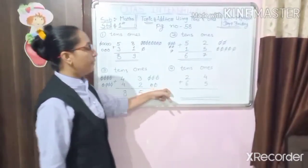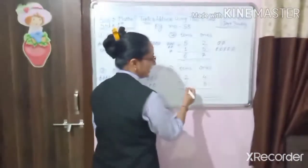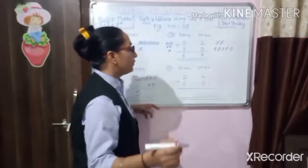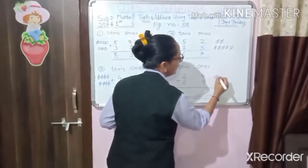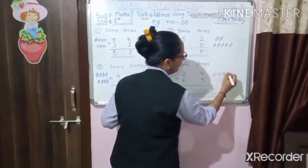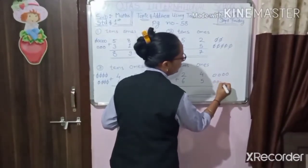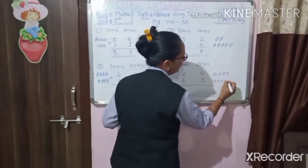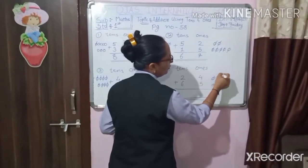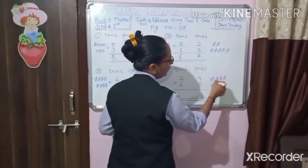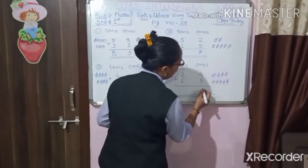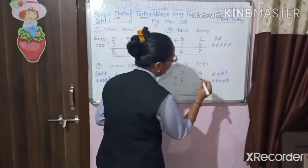Now number 4: 24 and 65. So what we have to do here first? We draw the circles: 1, 2, 3, 4. Then 1, 2, 3, 4, 5. Count together: 1, 2, 3, 4, 5, 6, 7, 8, 9. We have to write here 9.